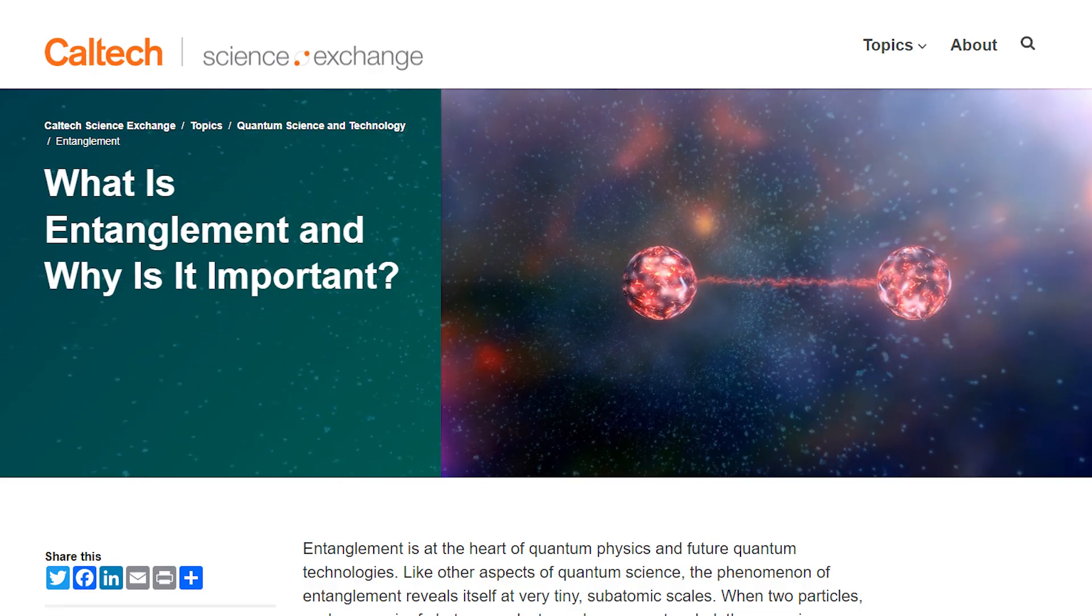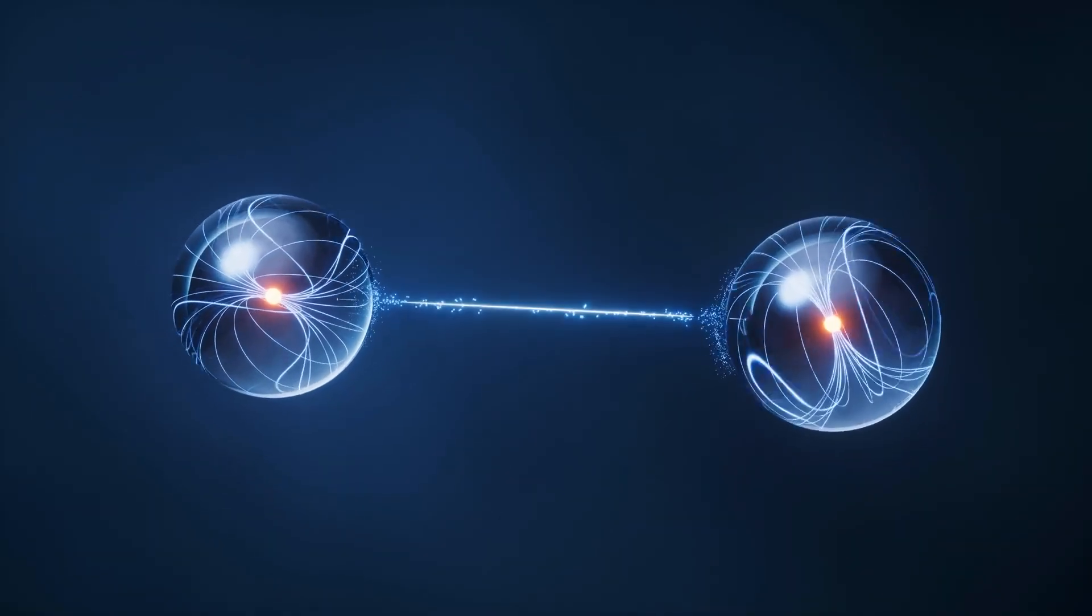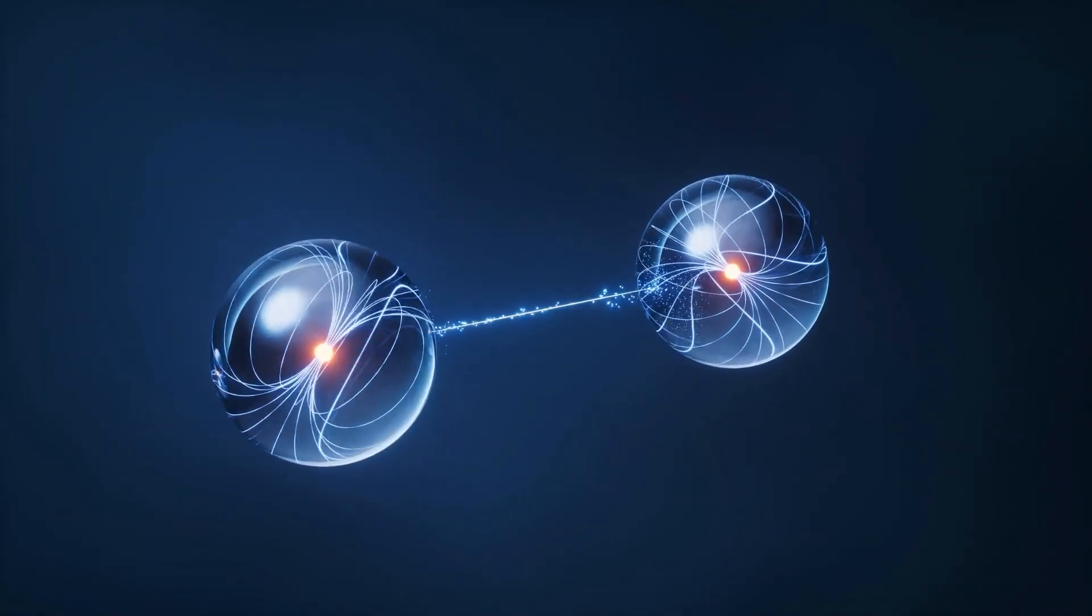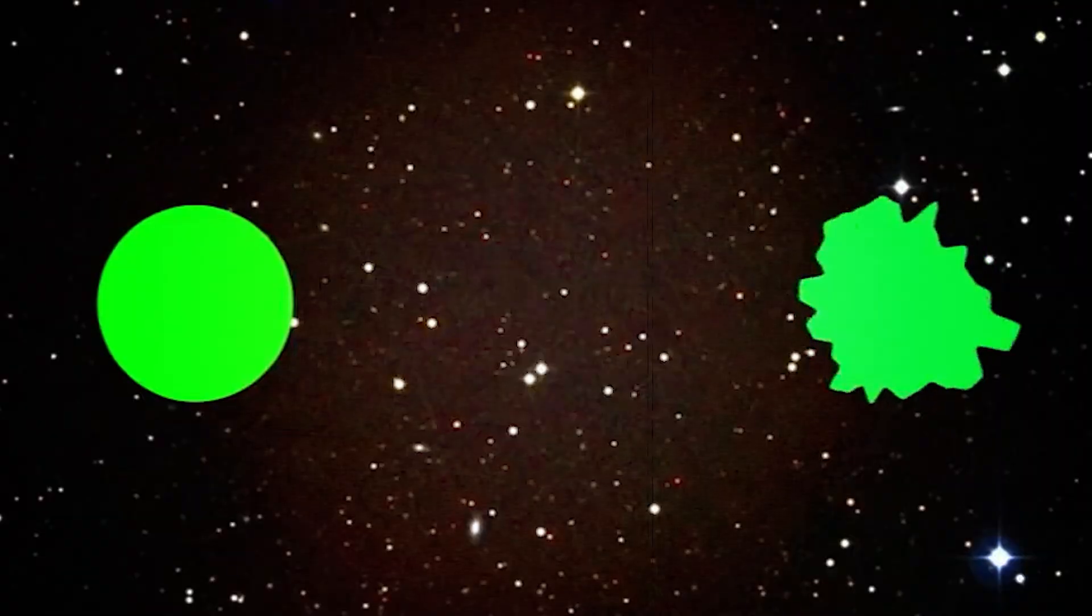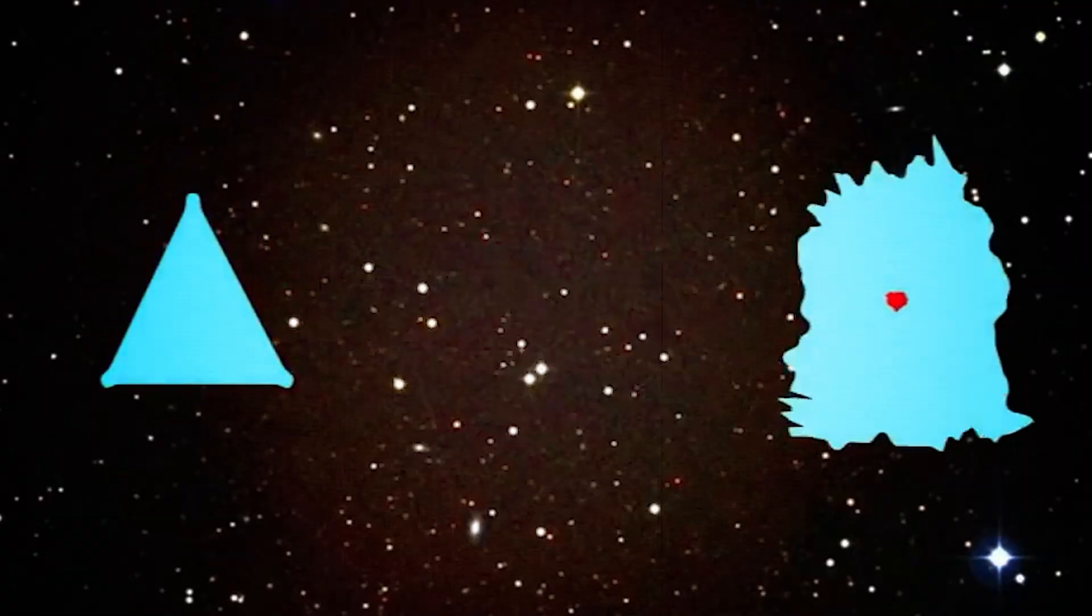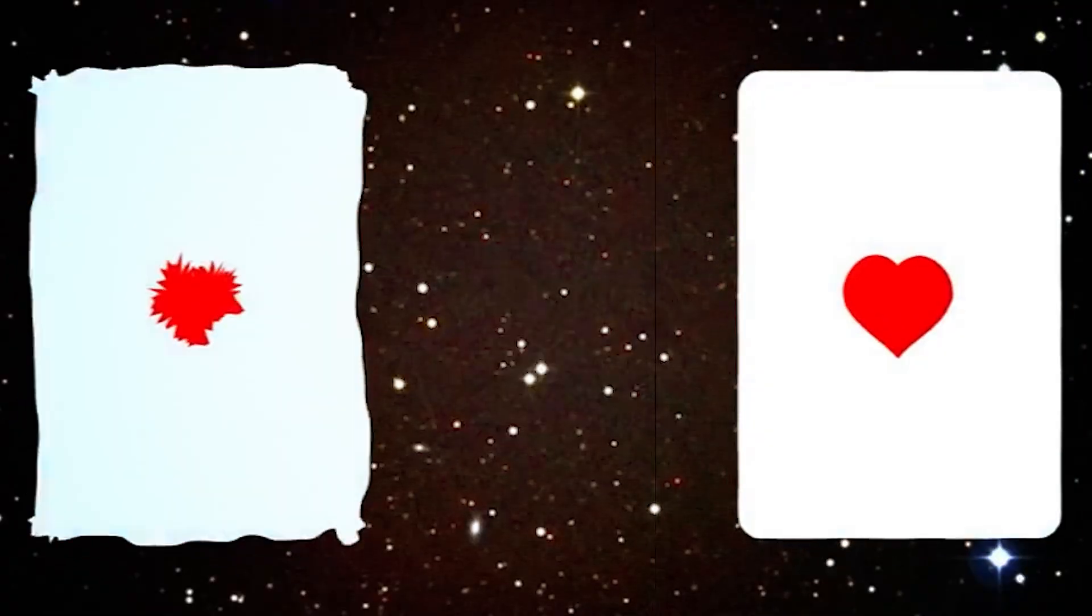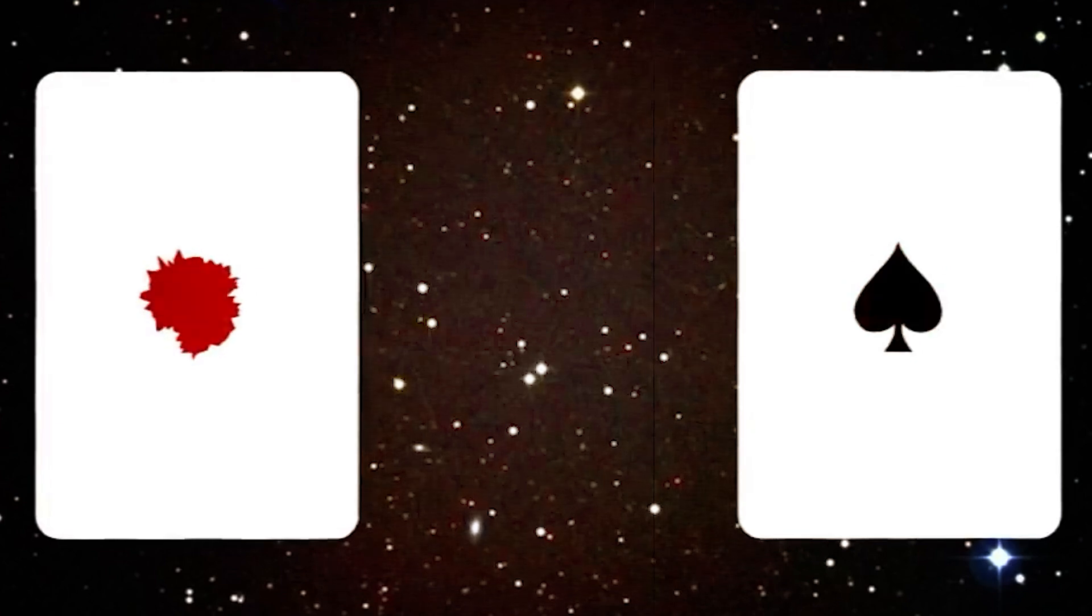So what exactly is quantum entanglement? It's a phenomenon that occurs when two or more particles become linked in such a way that the state of one particle instantly influences the state of the other, no matter how far apart they are. It's almost like they're sharing information instantly, defying the limits of space and time as we know them.